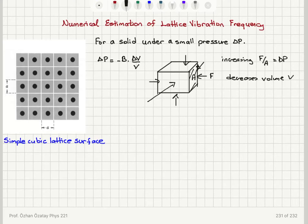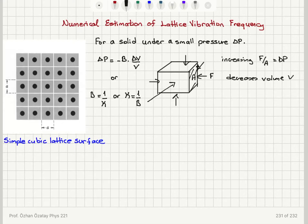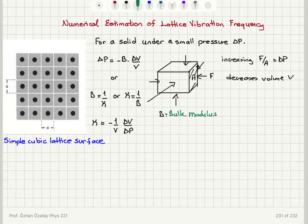Or we can write the bulk modulus as 1 over kappa. Therefore, kappa is equal to 1 over the bulk modulus. So we can see that the compressibility kappa is equal to minus 1 over the volume times delta v over delta p. So B is our bulk modulus and kappa is our compressibility, which is 1 over the bulk modulus.